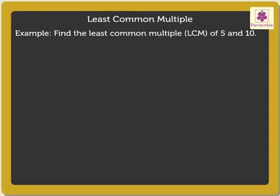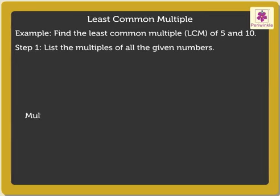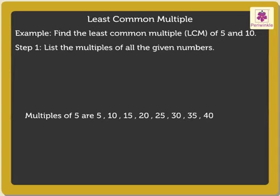We will follow a three-step process to find the least common multiple. Step 1: List the multiples of all the given numbers. The multiples of 5 are 5, 10, 15, 20, 25, 30, 35, 40, and so on.